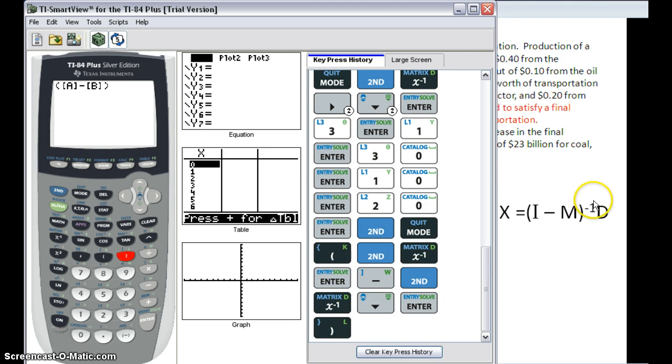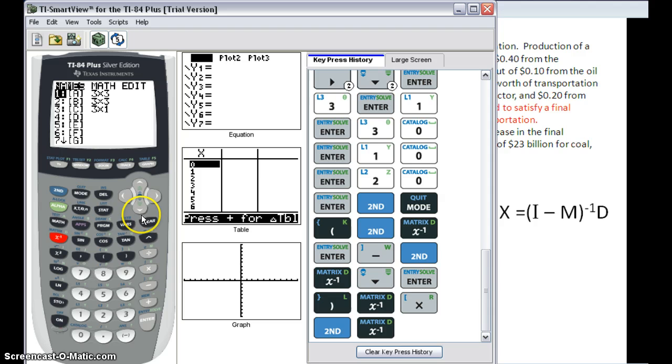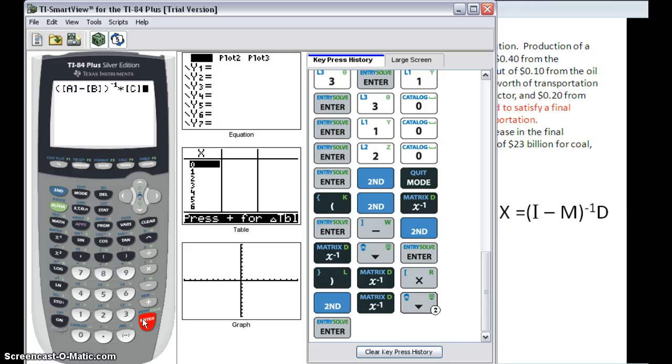Now, to find the inverse of this, which is the meaning of that exponent of negative 1, that key that I've been typing, but I've been using the second function with it, I actually want to type the key itself. So you see the little negative 1, and then I want to multiply that, times D, the demand matrix, so second, matrix, and we put our demand matrix in third, so number 3. And so here is, in my calculator, the same equation that we have. And at this point, the magic happens. We just press enter, and it gives us an answer. So 71, 26, 67.